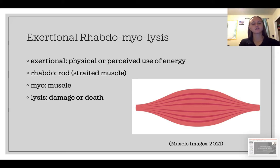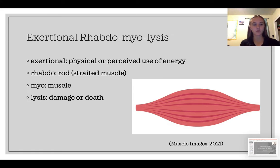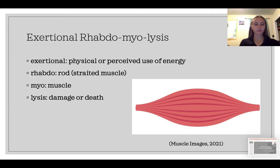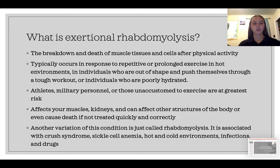Now, rhabdomyolysis. Rhabdo kind of means rod, or has something to do with your striated muscle. Myo meaning muscle, and lysis meaning damage or death. So when you put those terms together, you get the breakdown and death of muscle tissues and cells after physical activity.